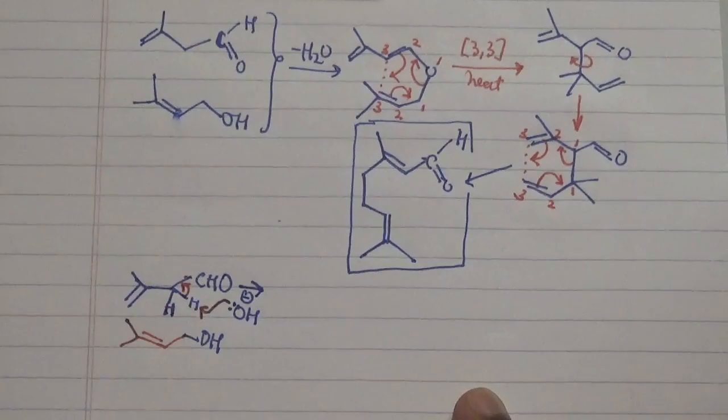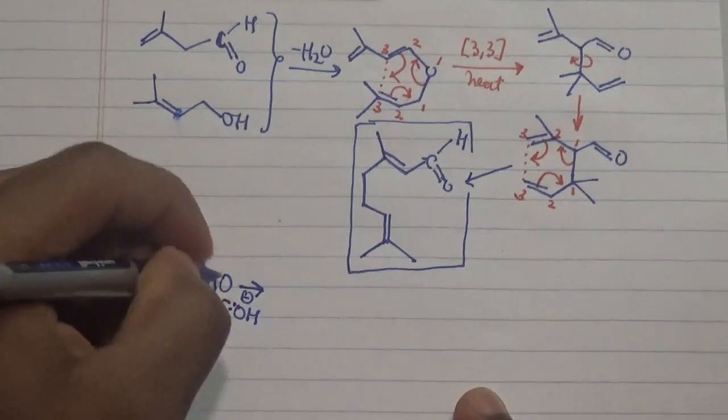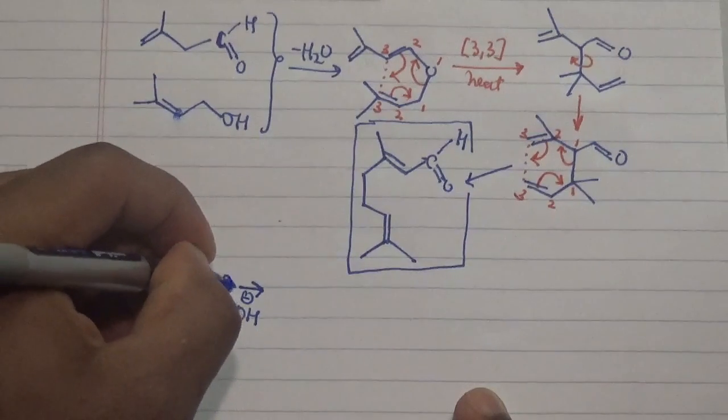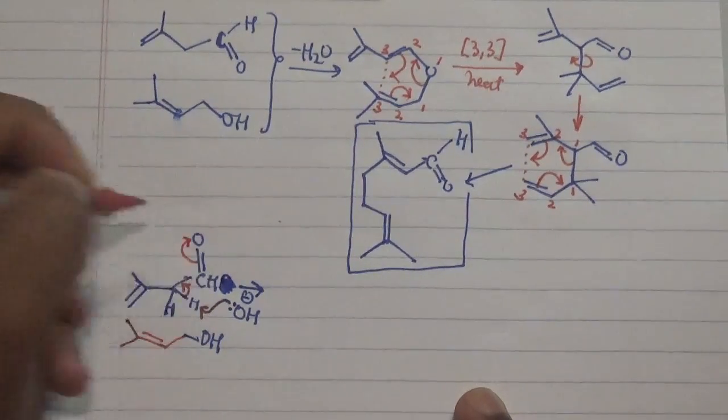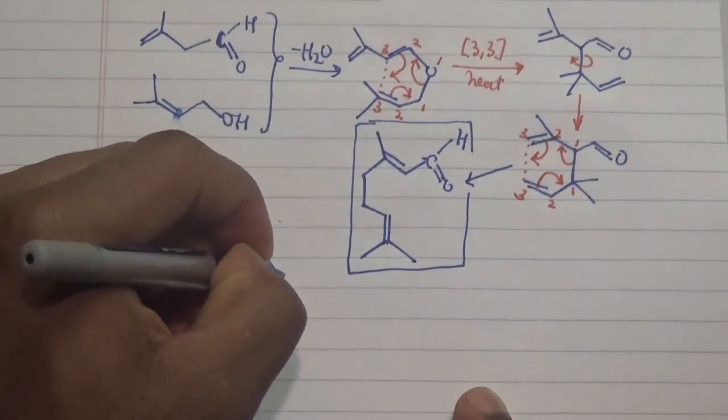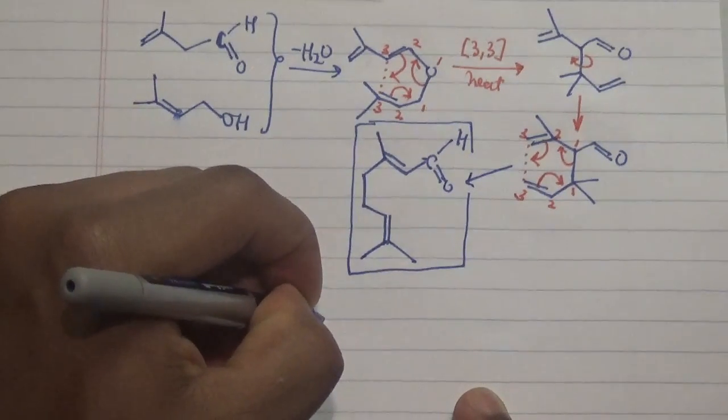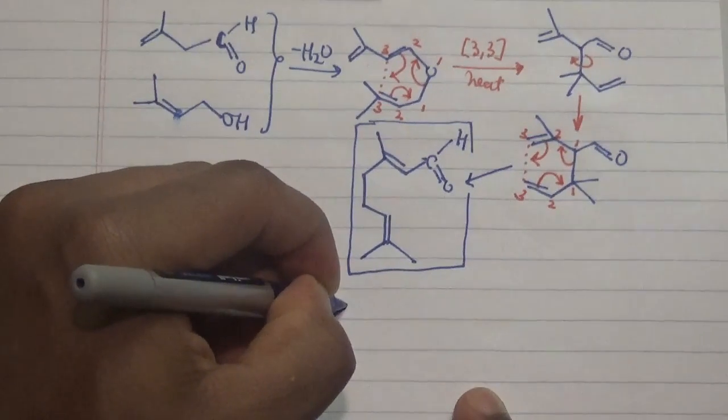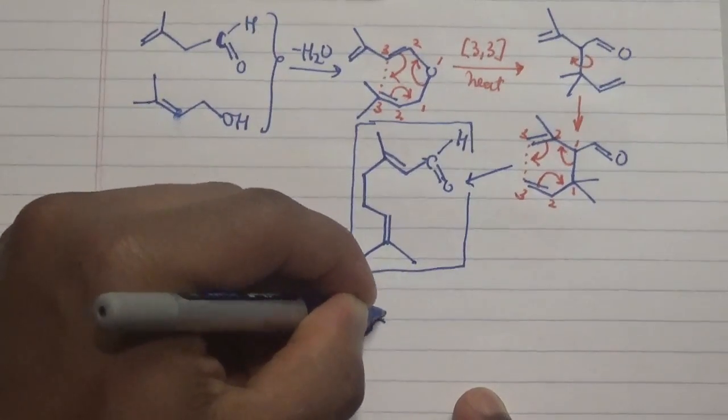By that way you can actually see that this will actually form an enolate over here. And what we have is this particular segment with a double bond here, and over here we have a hydrogen and an oxygen negative charge species.